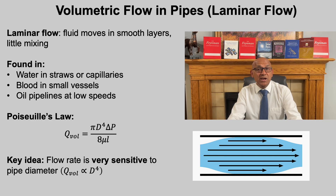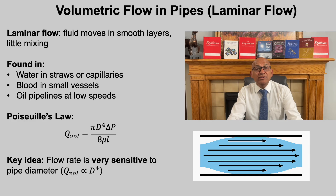We will start our discussion with laminar flow, which means that the fluid moves in smooth parallel layers with very little mixing. This is different from turbulent flow, where the fluid swirls and mixes randomly. We see laminar flow in everyday situations: water moving through thin capillaries or straws, blood flowing smoothly in vessels, and oil moving through pipelines. For laminar flow in a pipe, the volumetric flow rate is given by Poiseuille's law: Q equals pi times d to the fourth power times the pressure difference, divided by 8 times viscosity times length. The flow rate is proportional to d to the fourth power.